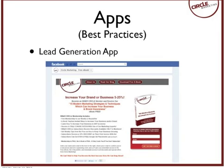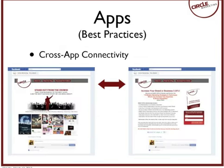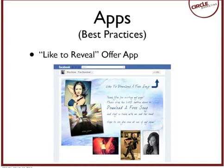If you look at the navigation area — in this case labeled 'Free E-book' next to the name 'Circle Marketing' — that's where users normally navigate between apps by using the dropdown. But that's not the most intuitive approach, so we suggest creating your own branded links within the app itself. This keeps people within your page, helps maintain proper branding, and cross-connects the different app pages you have.